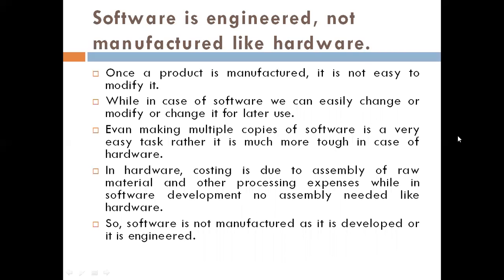The next topic is software is engineered, not manufactured like hardware. Once a hardware product is manufactured, it is not easy to modify it. In the case of software, we can easily change or modify it for later use, and making multiple copies of software is a very easy task — much tougher in case of hardware. Hardware costing is due to assembly of raw materials and other processing expenses, while in software development no assembly is needed. So software is not manufactured — it is developed or engineered.